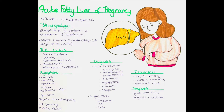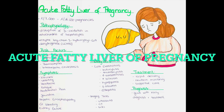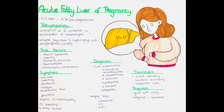Hello and welcome to this channel. In this video we will talk about acute fatty liver in pregnancy, also called spontaneous fatty liver of pregnancy. It is a rare life-threatening complication of pregnancy that causes liver dysfunction and eventually liver failure.